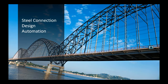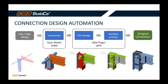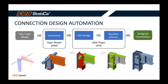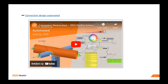We also want to highlight steel connection design automation: the process of going from a global structural model to a final optimized connection design with minimal repetitive work. A previous webinar covered this full steel connection automation workflow using IOM and API, available on our website and YouTube. The steel connection API is more developed than the concrete one, offering more possibilities.